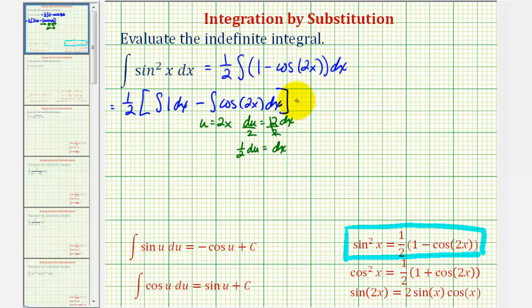So let's go ahead and write this again. We'll have one half times the quantity of the integral of one dx and then we'd have minus the integral of this would be cosine u but dx is equal to one half du so we have an extra factor of one half and then du.